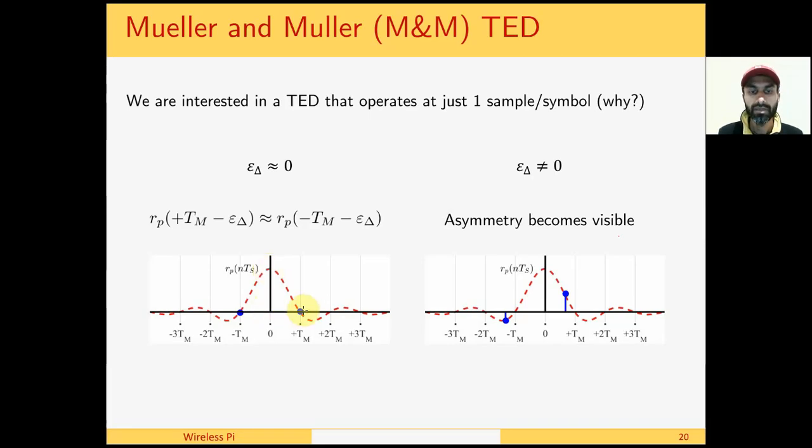We can see that when the timing error is close to zero, then R(+TM) and R(-TM) are almost equal, where R is the raised cosine pulse. However, when the timing is not zero, then we see an asymmetry - this one rises much faster than this one.